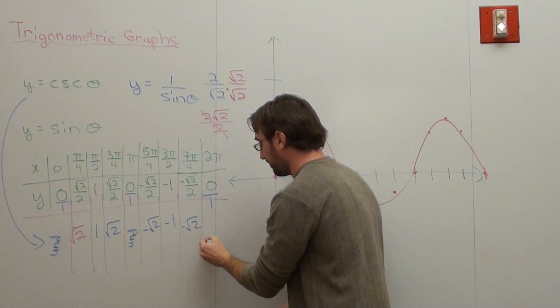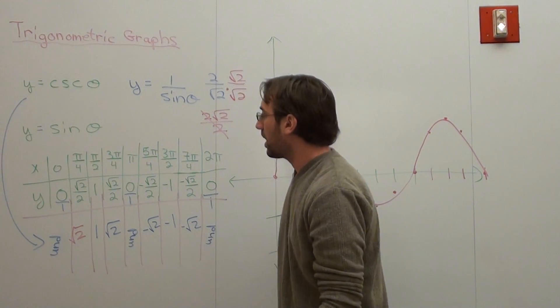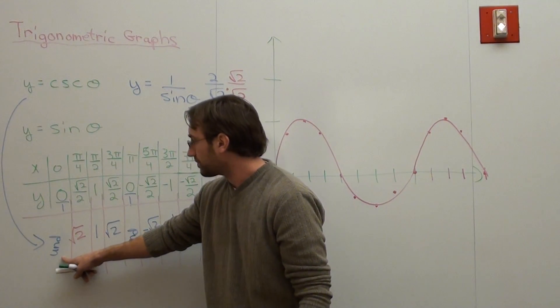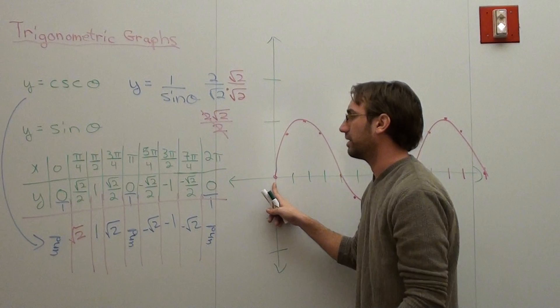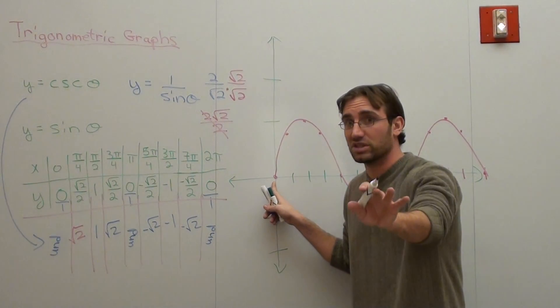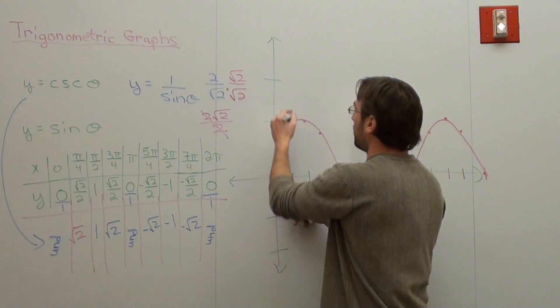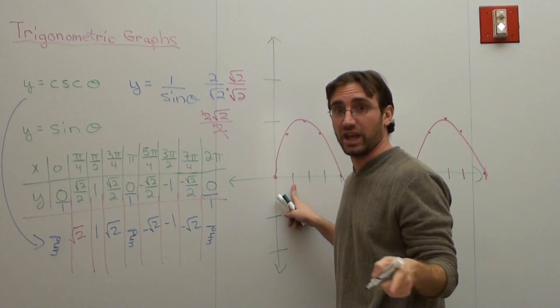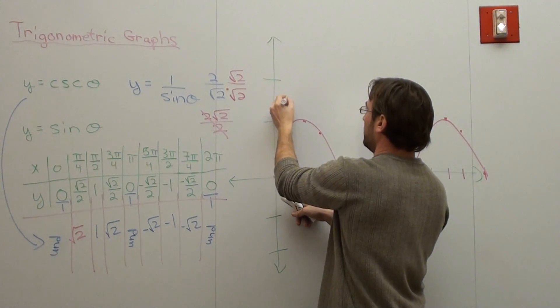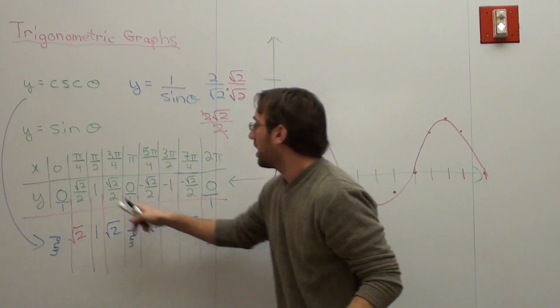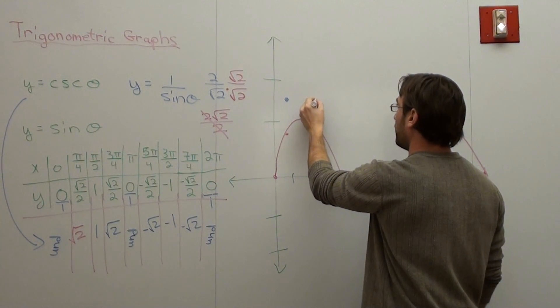This is one over zero, which when flipped is undefined. At zero for the cosecant graph it's undefined, so here it's undefined. At pi over four it's root two, so it's 1.414, and this is the cosecant graph that I'm graphing right now. 1.414 is like right here - close as I can get it. At pi over two it's one.